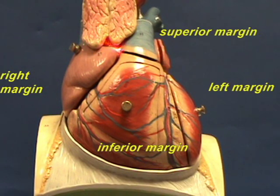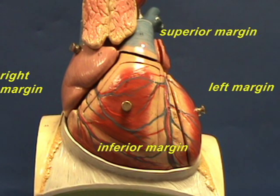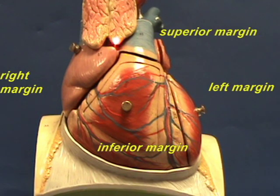And in the superior margin, this is where you find the large vessels, the great vessels that are leaving the heart, including the pulmonary trunk and the aorta, which would be right behind the thymus over here.